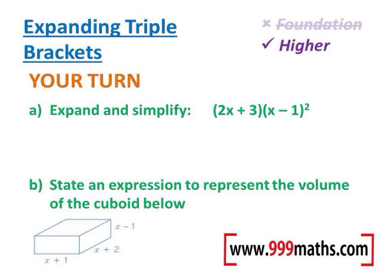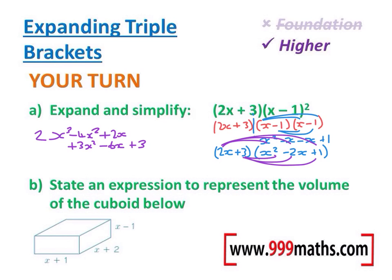OK, so step one is to set it up as a triple bracket. Step two is to expand those second and third brackets. Step three is to remember to multiply that by the first bracket before actually multiplying that out in full. And then, of course, finally simplifying your answer, which gives us 2x cubed minus x squared minus 4x add 3.